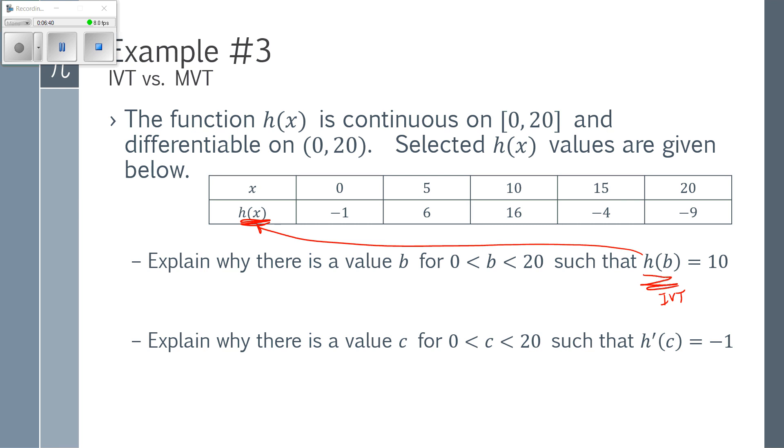So I first need to show I'm allowed to use the IVT. So we are told H of X is continuous on that closed interval 0 to 20. So the IVT applies. Well, somewhere from there, I just need to know that I need some endpoints here that were one's bigger than 10 and smaller than 10.